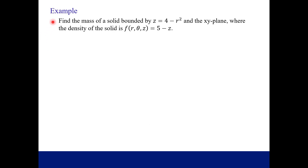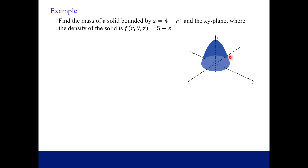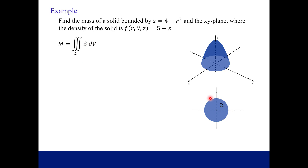Let's try out an example. We want to find the mass of a solid bounded by z equals 4 minus r squared and the xy-plane, where the density of the solid is given as a function of r, theta, and z, which is just 5 minus z. If we graph this, it's a paraboloid, and the upper boundary for z is 4 minus r squared. Our mass integral is the triple integral over the region D of the density function times dV. Let's focus on the projection R down here, which is like the base of this paraboloid since we're bounded below by the xy-plane.